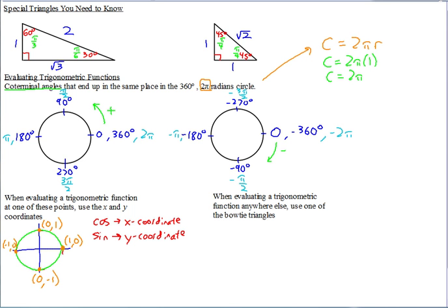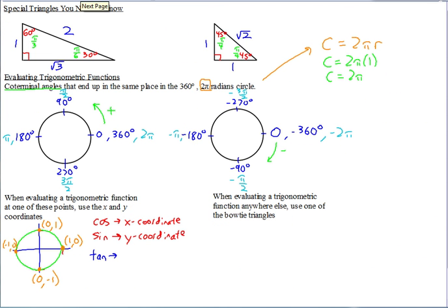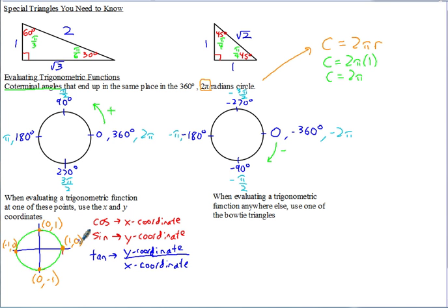For tangent, recall from our identities that tangent equals sine over cosine. Since sine is the y-coordinate and cosine is the x-coordinate, tangent is y over x. So at (1, 0) and (-1, 0), tangent equals zero. But at (0, 1) and (0, -1), you'd have one or negative one divided by zero, which is undefined — that's why tangent has vertical asymptotes at pi over 2 and negative pi over 2.